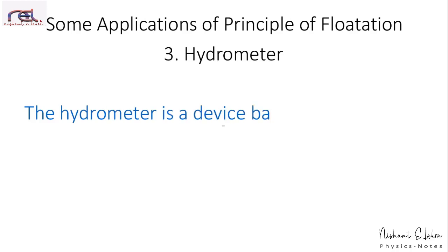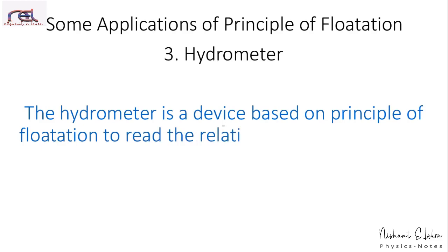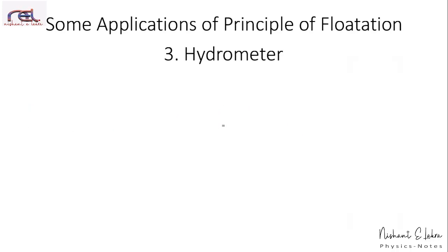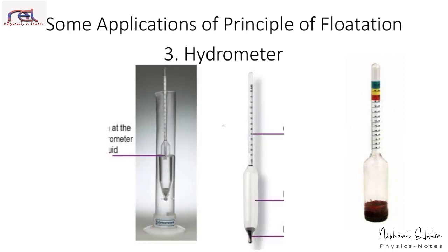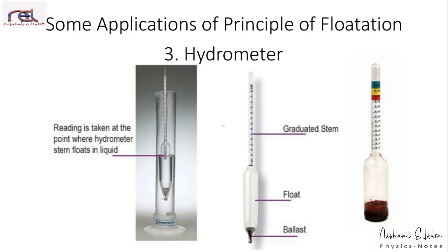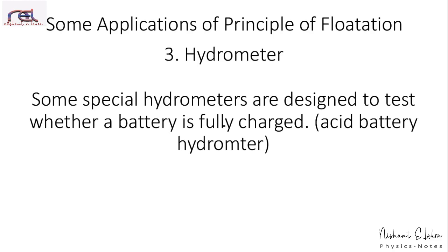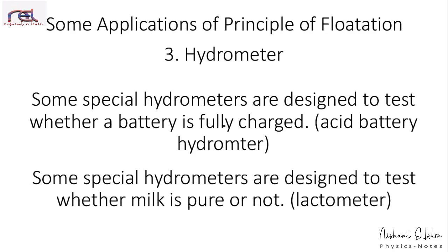Let us see more applications of the principle of flotation — the hydrometer. A hydrometer is a device based on the principle of flotation used to read the relative density of a liquid directly. The reading is taken at the point where the hydrometer stem floats in the liquid. It has a graduated stem and a float. There are special hydrometers designed to test whether a battery is fully charged, known as acid battery hydrometers, and those designed to test whether milk is pure, known as lactometers.